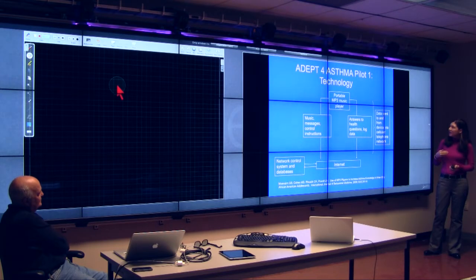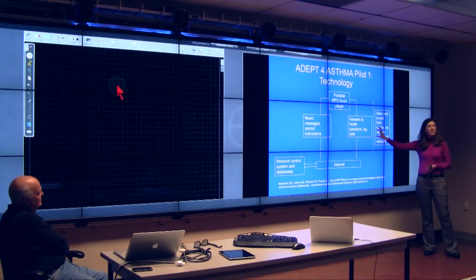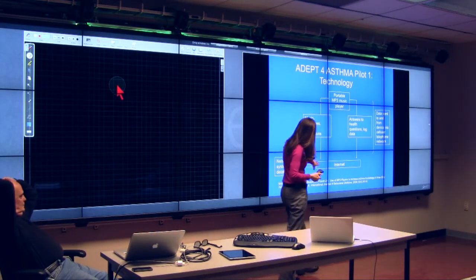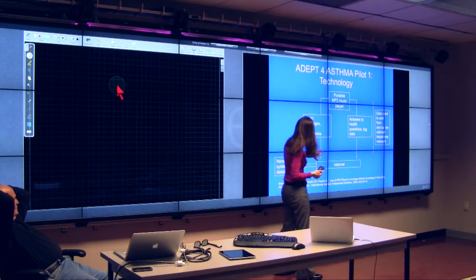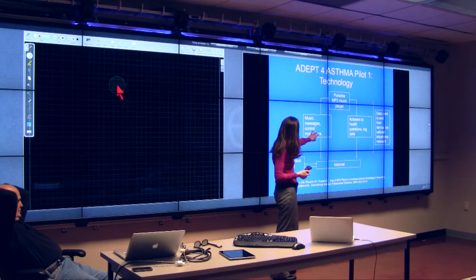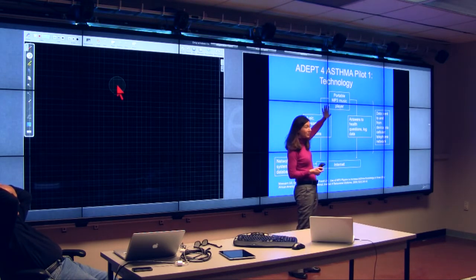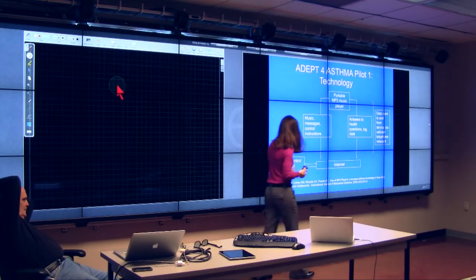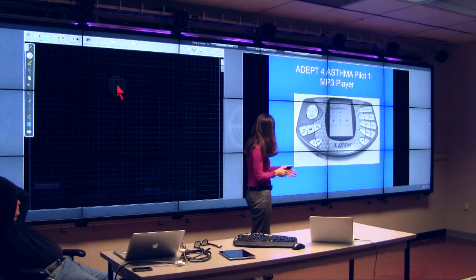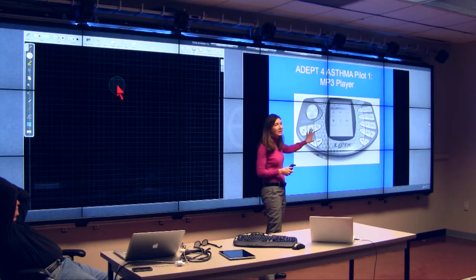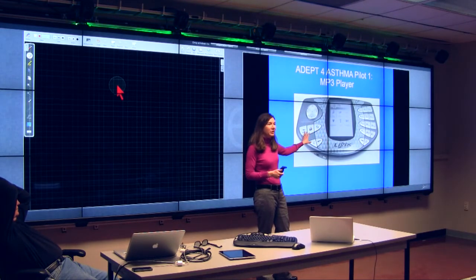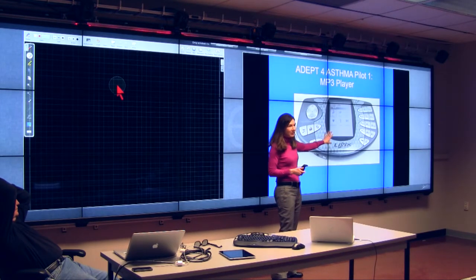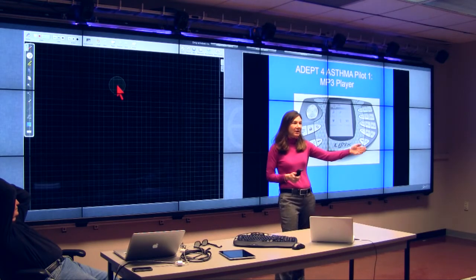Some of my friends from MIT and I worked on two patents to develop this system. So here we have our network control system and databases. We use the internet and we use the cell phone network. We send the participants music messages and control instructions to their portable MP3 music player, which is also a cell phone. And then we retrieve answers to health questions and log data through the cell network and internet back to our network control system. This is back in 2005. We actually bought Nokia N-Gage cell phones off of eBay. We refurbished them.